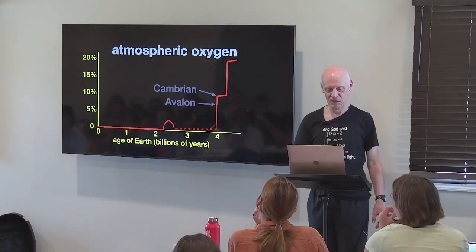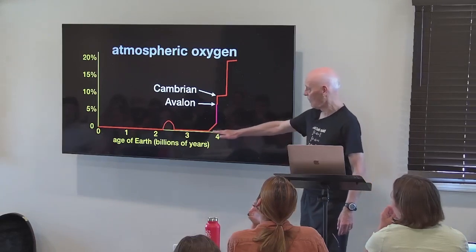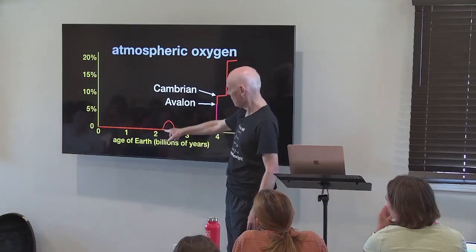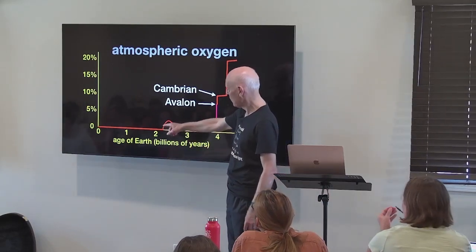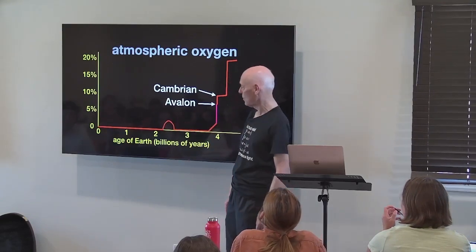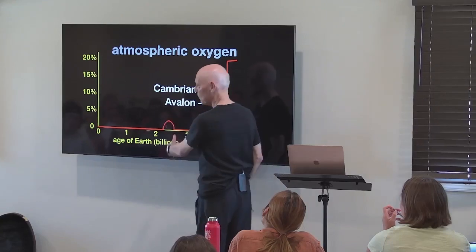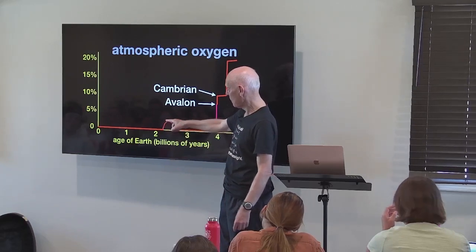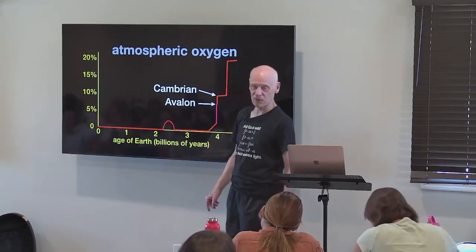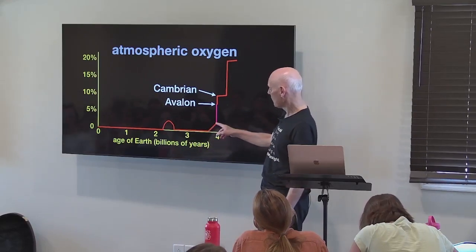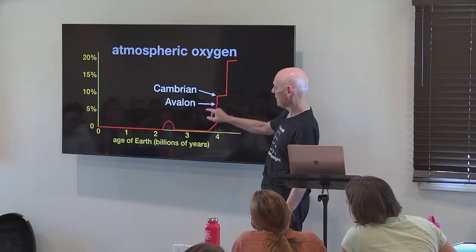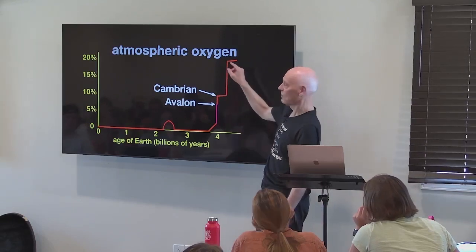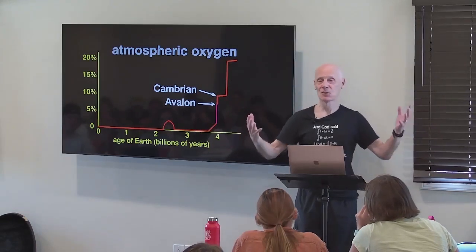The oxygenation history of the planet shows about 1 one-hundredth of a percent for the first 2.2 billion years, then a jump to about 2% during the first great oxygenation event — coincident with the continents forming. It jumps back down to less than 1%, then up to 2%, then from 2% to 8% giving the Avalon explosion. When it jumps to 10%, you get the Cambrian explosion. When it reaches 20%, you've got mammals — mammals need 20%.